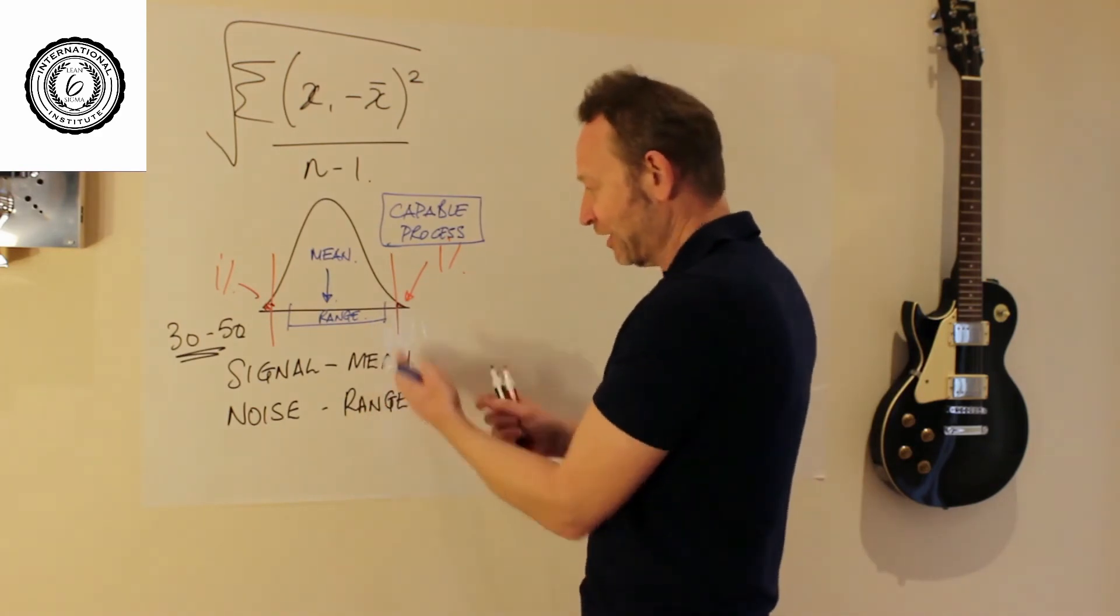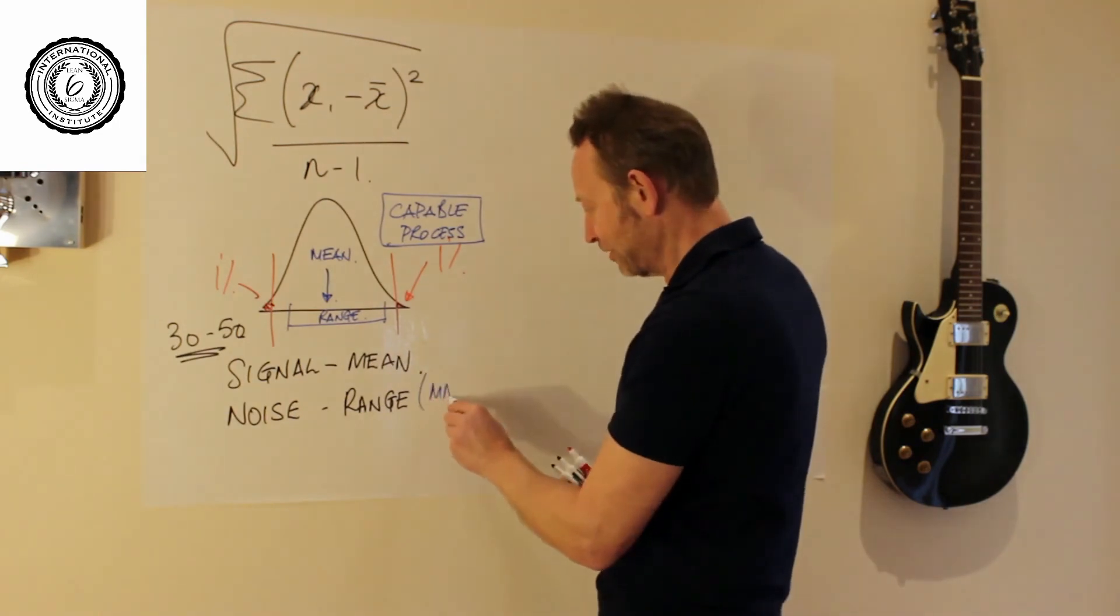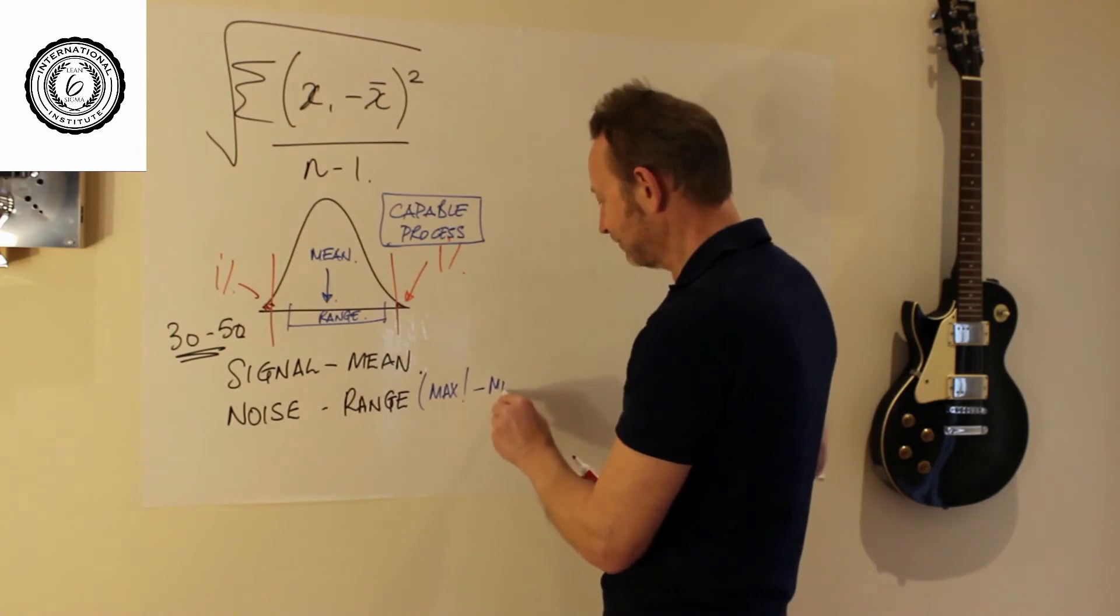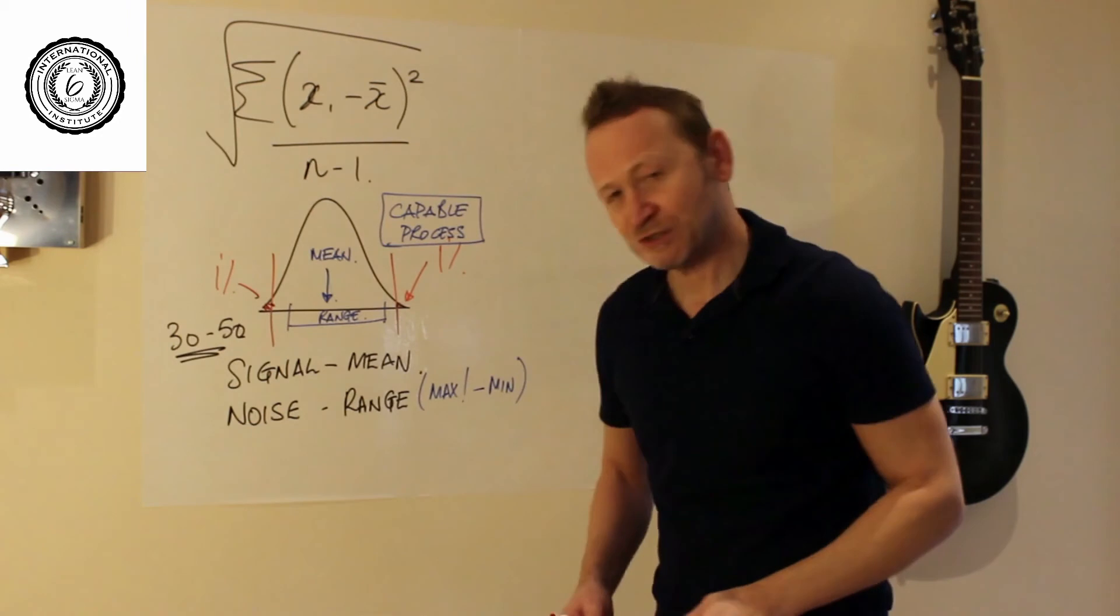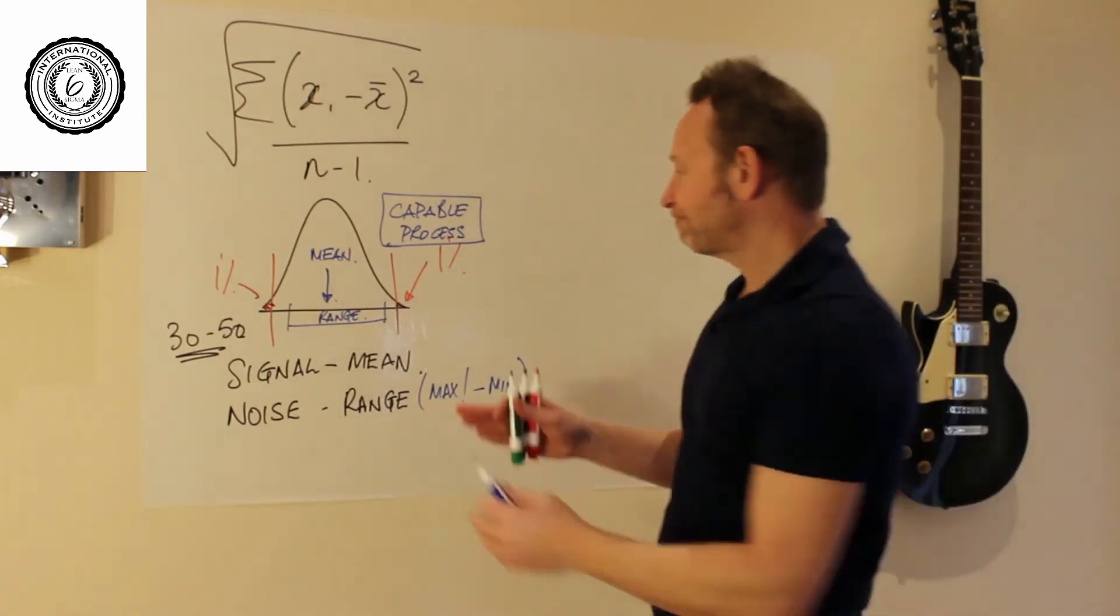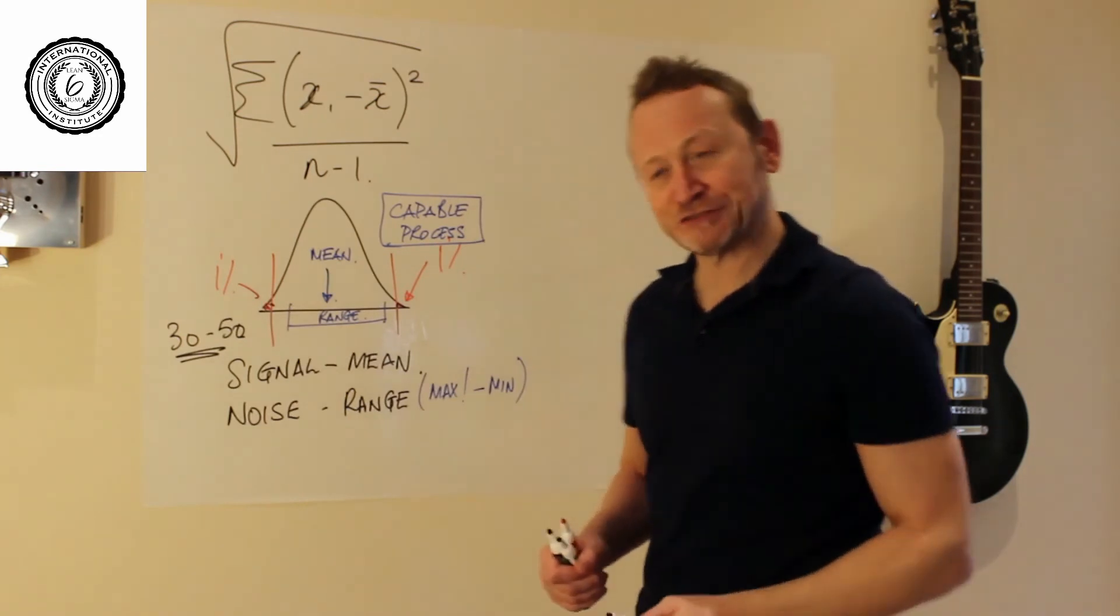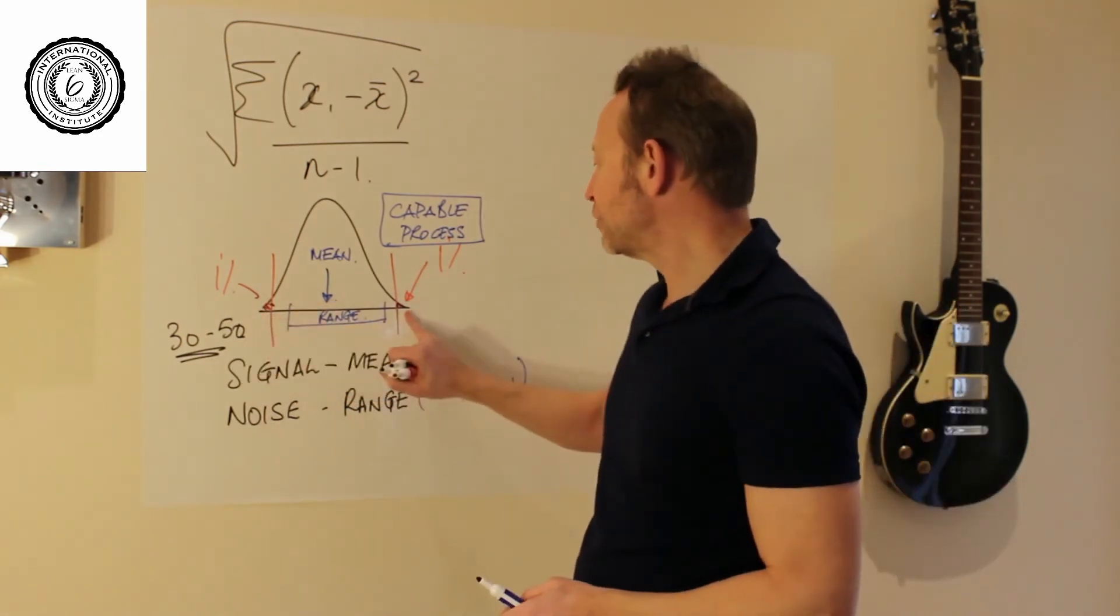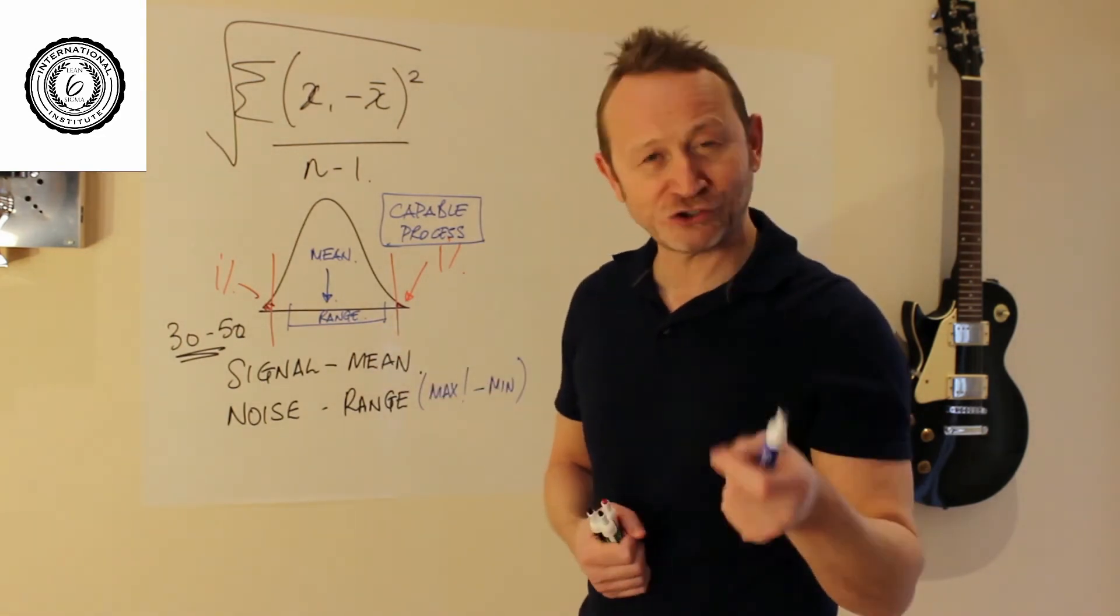They're very easy to calculate. So the range, the max minus the min. Why do we want to use this thing? Well, let's think about the range. I've only taken 30 to 50. Inside the 30 to 50, do you really think I've captured all the extreme results?